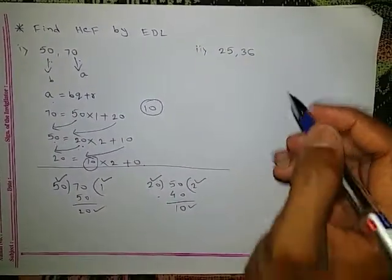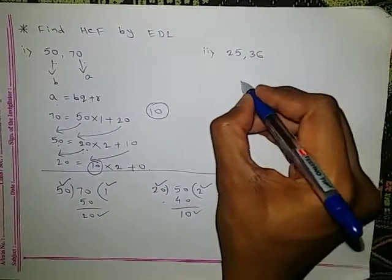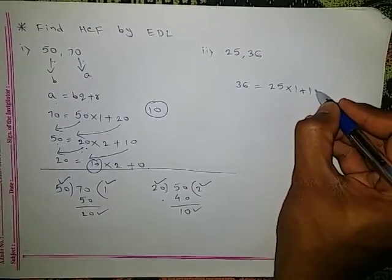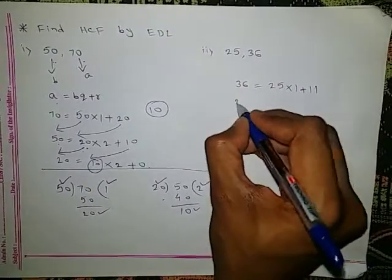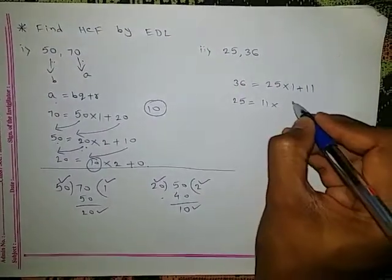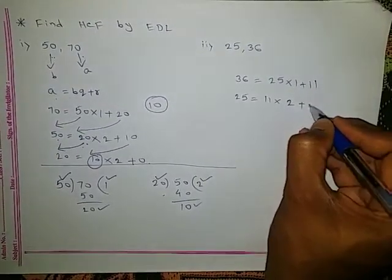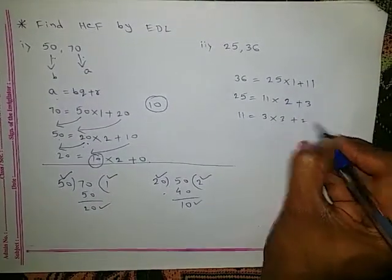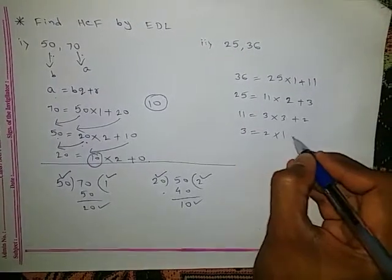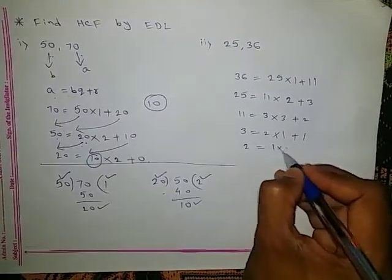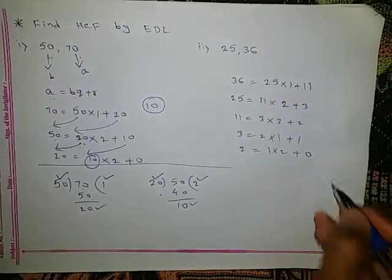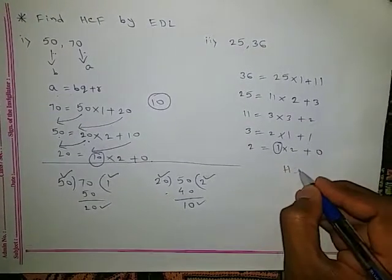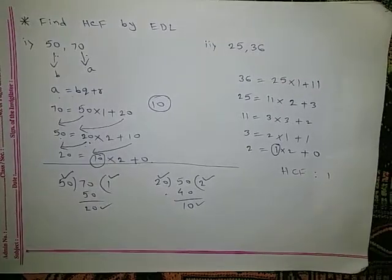Let us check one more: 25 and 36. The bigger number is A. 36 = 25 × 1 + 11. Next, 25 = 11 × 2 + 3. Bring 11 and 3: 11 = 3 × 3 + 2. Again, bring 3 and 2: 3 = 2 × 1 + 1. Then 2 = 1 × 2 + 0 remainder. Whenever we get remainder 0, we stop, and that divisor becomes the HCF. So HCF of the given two numbers is 1.